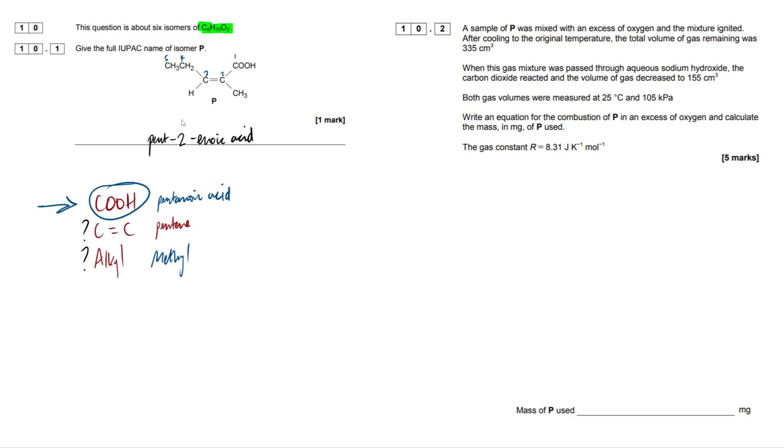Now, what we want to do is include our branching methyl group here. And we always want to say which position the carbon is on. So, this is just again on our second carbon. So, this is going to be 2-methylpent-2-enoic acid.